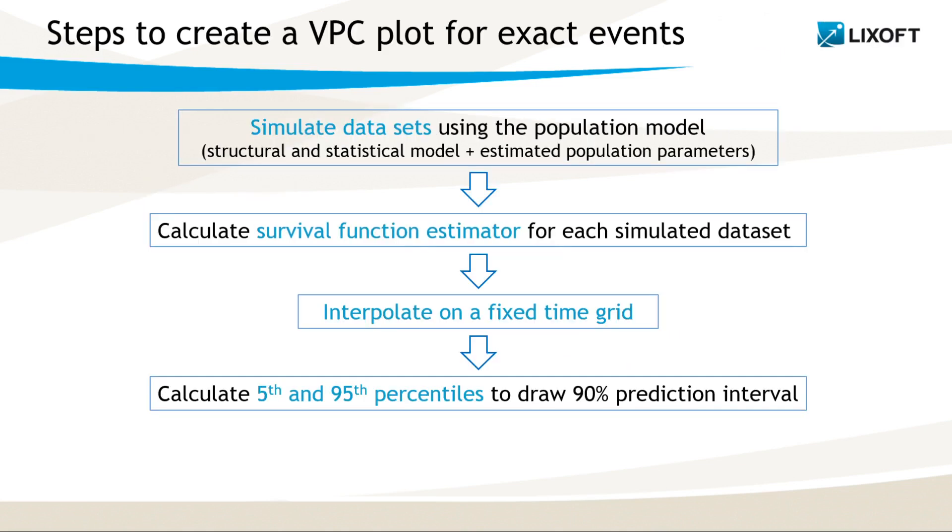Construction of a VPC plot in Monolix requires several steps. First, we use the population model to simulate datasets. It contains the structural and statistical model and population parameters estimated in a Monolix project. Then, for each simulated dataset, we calculate the survival function using one of the two estimators. Because in time-to-event problems, time itself is an observation, we define a fixed-time grid and interpolate simulated curves on it. As a result, at each time point of this grid, we have a set of probabilities that events occur after that point. So finally, we can calculate 5th and 95th percentiles to draw a 90% prediction interval.